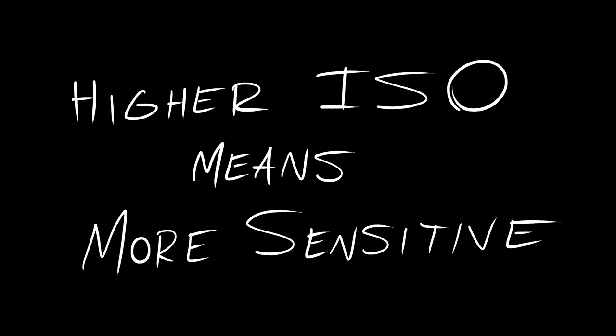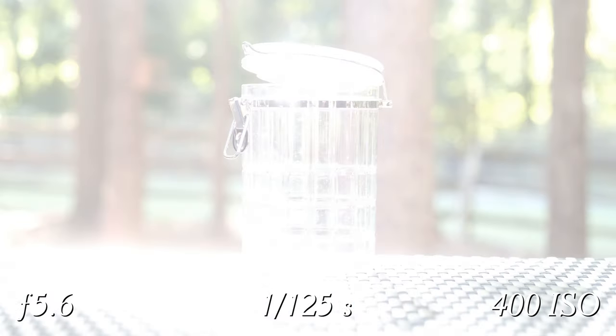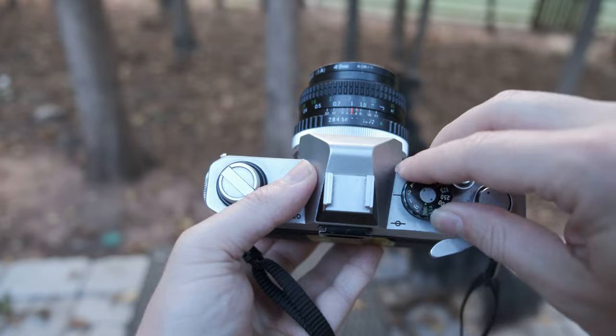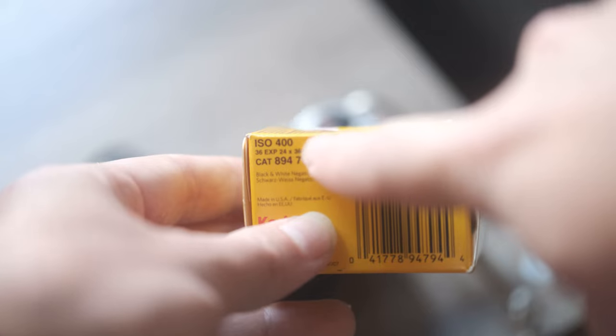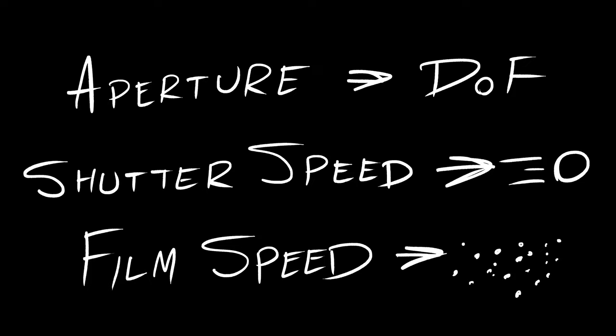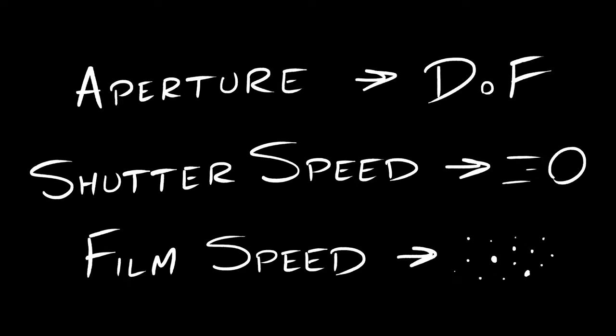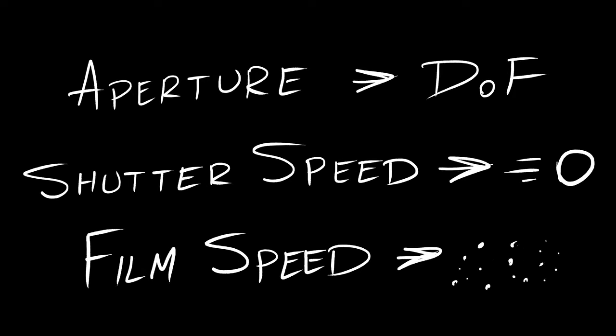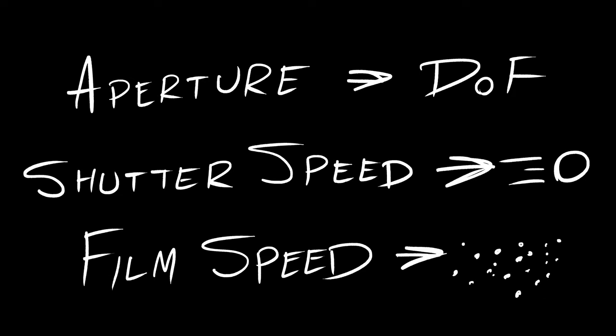The higher the ISO, the more sensitive your PCT is to light, making the picture brighter. So why are there three different ways to control exposure? Each of these three controls have a trade-off: aperture affects depth of field, shutter speed affects motion blur, and film speed affects noise or grain.